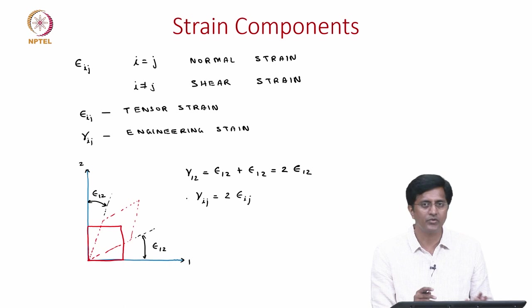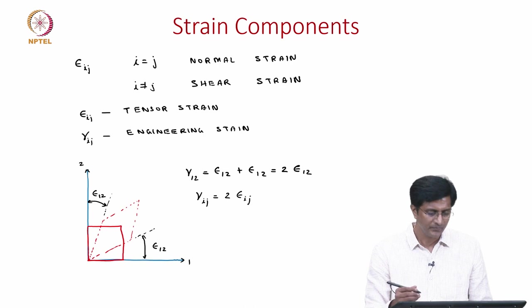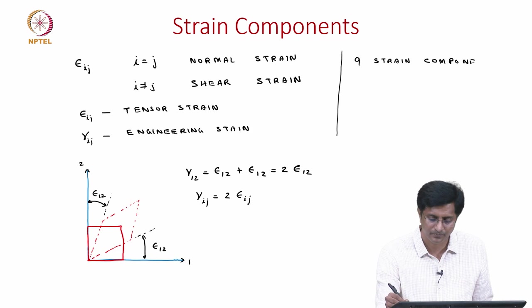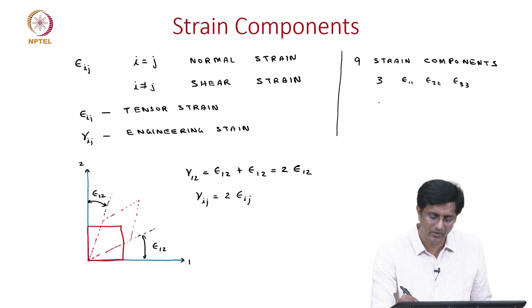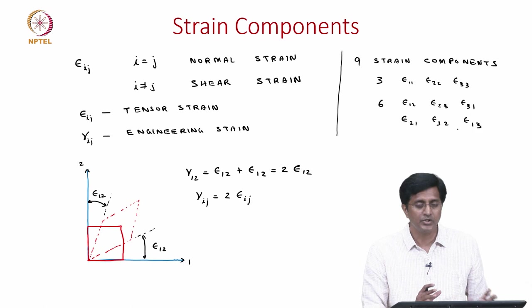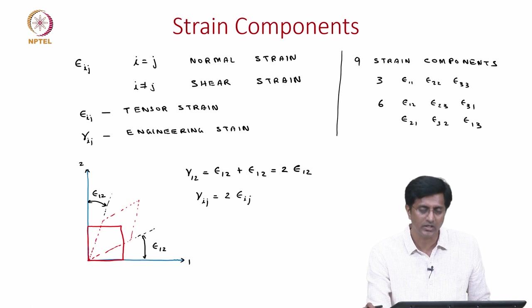How many strain components do we have? Similar to stresses, here too we have 9 strain components, of which 3 are the normal strains: epsilon_11, epsilon_22 and epsilon_33. Then we have 6 shear strains: epsilon_12, epsilon_23, epsilon_31 and then epsilon_21, epsilon_32 and epsilon_13. This gives us the components of stresses and strains — for a more generalized material in 3D, at a point there are 9 components of stresses and 9 components of strains.